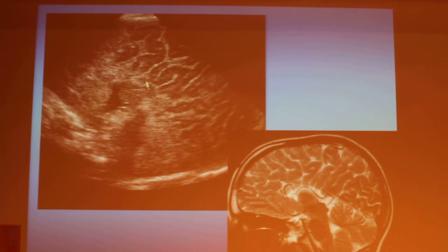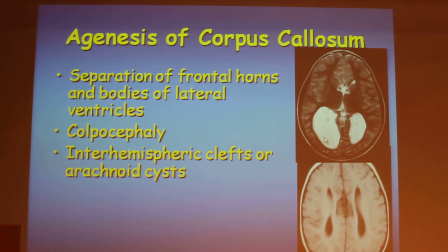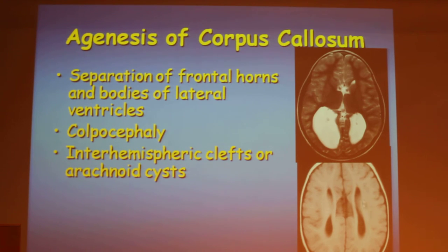There is no corpus callosum or cingulate gyrus in the midline. Off-midline sagittal imaging will show us hydrocephalus and mainly colpocephaly. On axial imaging, colpocephaly is a sign for agenesis of corpus callosum, and the lateral ventricles are parallel.